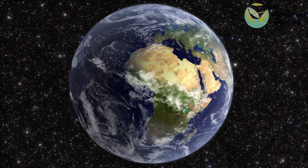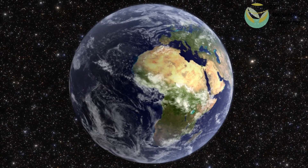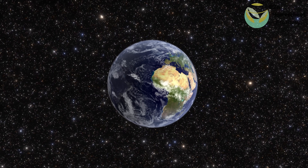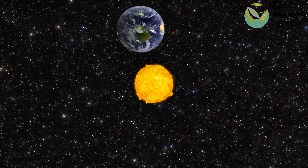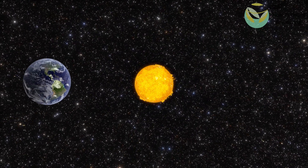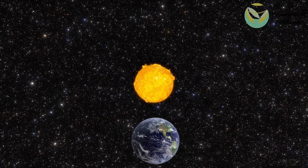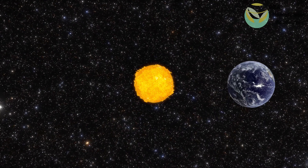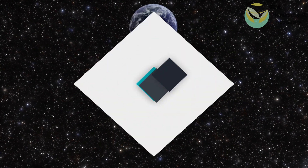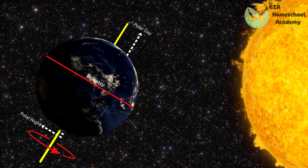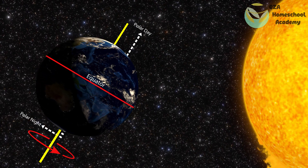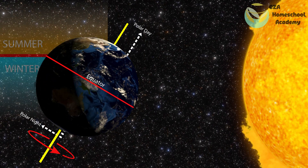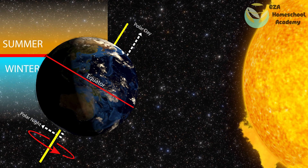Let's find out why this happens. The Earth is like a big ball that goes around or orbits the sun. Instead of spinning straight up and down, it is tilted to the side. This tilt is what gives us our seasons.